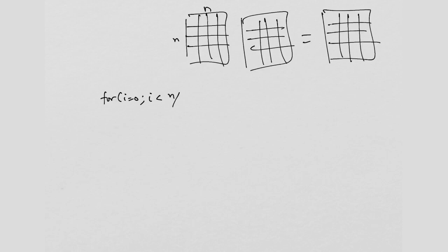What will be the number of blocks? n by the block size, and let me just assume that n is a multiple of B. i plus plus, that is the number of blocks. For j is equal to 0, j is less than n by B, j plus plus. For k equal to 0, k is less than n by B.